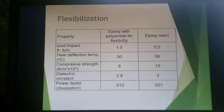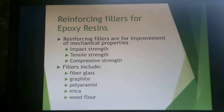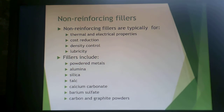Fillers are used in epoxy resins for cost reduction, lower exotherm, shrinkage reduction, strength enhancement, and lowering the coefficient of thermal expansion. There is typically no reaction between an uncured epoxy and the filler. There are two types: reinforcing fillers improve mechanical properties like impact, tensile, and compressive strength — examples include fiberglass, graphite, aramid (Kevlar), mica, and wood flour. Non-reinforcing fillers address thermal and electrical properties, cost, density control, and lubricity — examples include powdered metals, alumina, silica, talc, calcium carbonate, barium sulfate, and carbon/graphite powders.